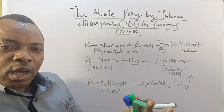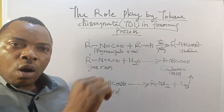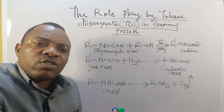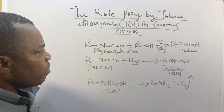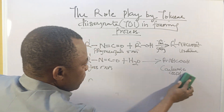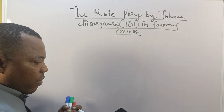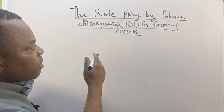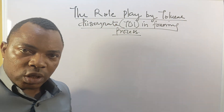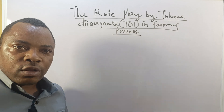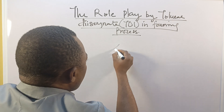Now let us look at the reactivity of this TDI. How does this TDI react? That is a question we need to answer. Before one is able to understand the reactivity, let us look at the entire structure of TDI isocyanate to see how the reaction occurs.